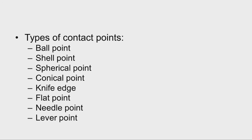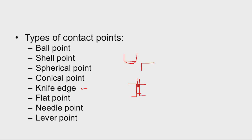There are different types of contact points available: ball point, shell point, spherical point, conical point, and knife edge. Depending upon the application, we select the proper contact point. For example, for a very narrow groove, we use a knife edge type so it enters the groove comfortably. Spherical type contact points with a larger radius are useful when workpieces are pushed from the sideways. There are also lever type indicators, which we will discuss shortly.